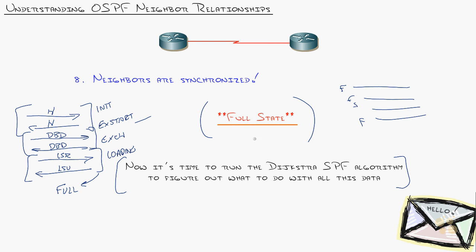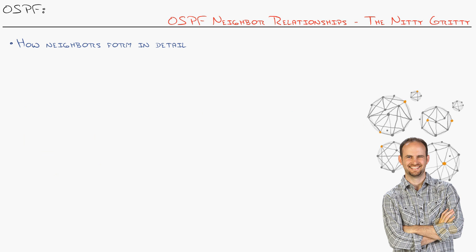Once neighbors form and reach full state, you run the SPF algorithm and figure out what to do with the data. In plain English, you generate your routing table. After that, data begins to flow throughout the network. You now know how OSPF neighbor relationships form. I hope this has been informative, and thank you for viewing.